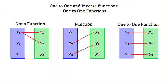The easiest way to illustrate a one-to-one function is to use mapping diagrams. Before we can talk about one-to-one functions, we have to remember what a function is. A function is a relationship — a special type of relationship where every domain value has only one range value.